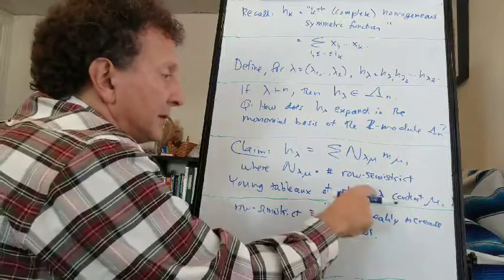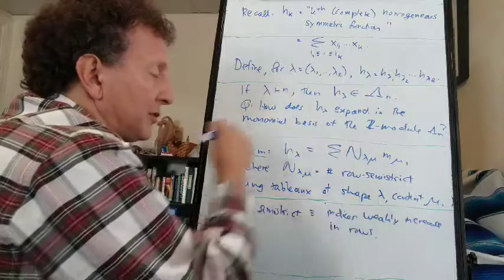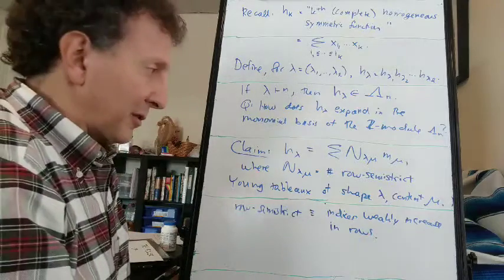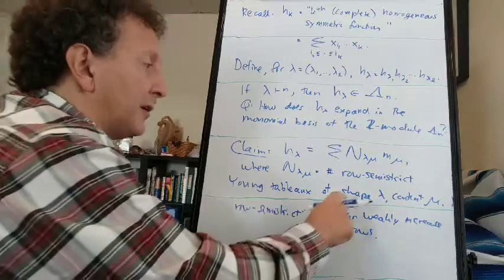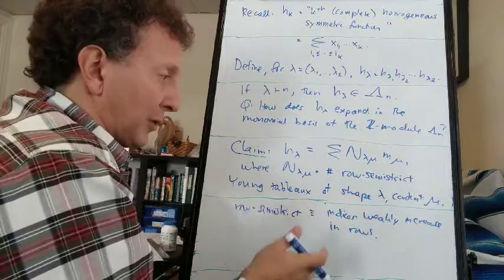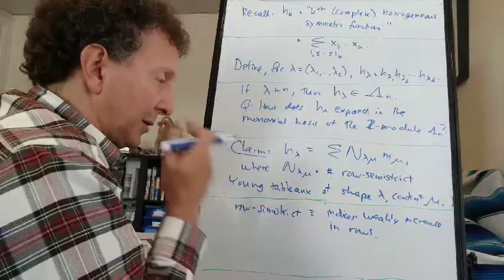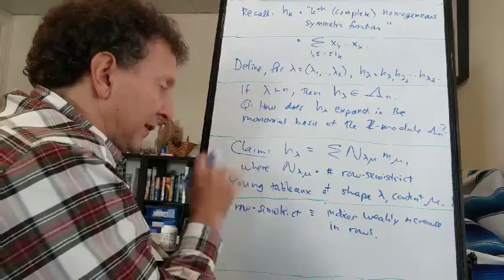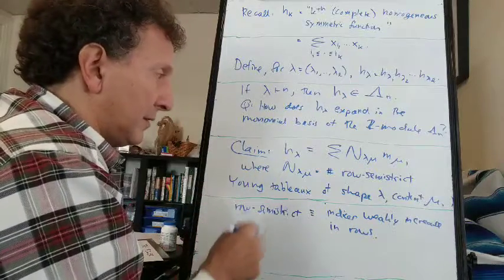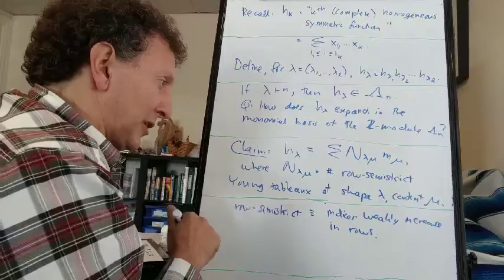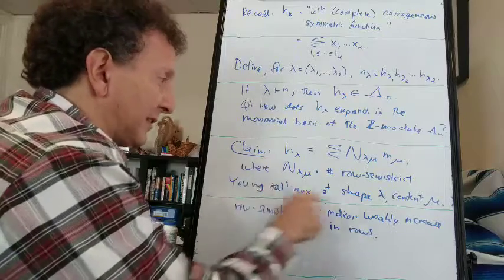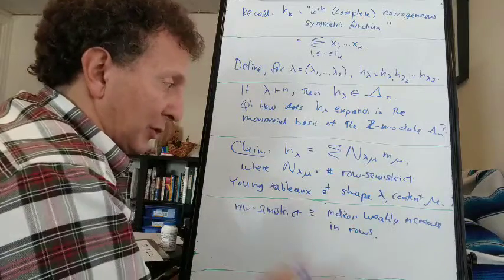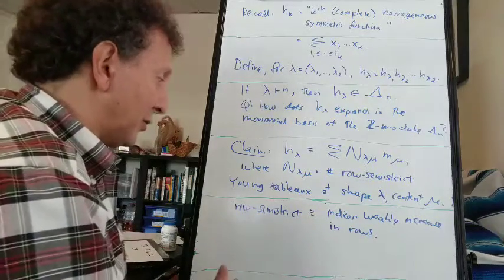I'm using shape lambda here, whereas I used shape lambda-transpose for the elementary symmetric functions, to make certain formulas come out nicer in the future. It's convenient to have the elementary tableaux be shape lambda-transpose and these homogeneous tableaux be shape lambda. Now we've got a condition in rows but not in columns, whereas before we had a condition in columns and not in rows.